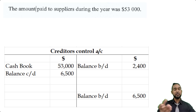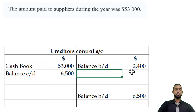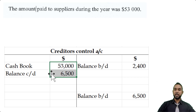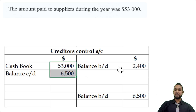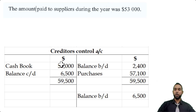The missing figure is purchases for the year. To find it, we balance off the account. Adding up the debit side gives $59,500. Taking the total and subtracting the closing balance carried down gives us our purchases figure. When both columns are totalled, they both equal $59,500, so our purchases figure is $57,100.